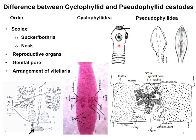The first differential point is the scolex. In Cyclophyllidea cestodes there are four suckers, and on top of this structure there is a horn-shaped structure called the rostellum, which may possess hooks or be without hooks. If there are hooks it is an armed cestode; if there are no hooks it is an unarmed cestode. In Pseudophyllidea cestodes there are no suckers; instead they have bothria, which are muscular folds used for attachment to the host.